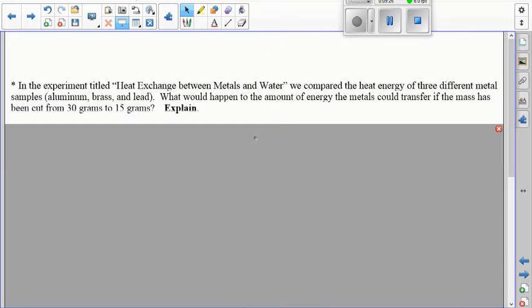In the experiment titled heat change between metals and water. So that was the one that used these guys on a string. This is the very first one we did when we were boiling metals. We compared the heat energy of three different metals. This is the aluminum one I'm holding in my hand. What would happen to the amount of energy the metals could transfer? So remember, we boiled these. We tossed them into our double insulator cup of water. How much energy would they be able to transfer if we took this aluminum sample, for example, let's say, and instead of being 30 grams like it is now, we cut it in half and it's only 15 grams. What would that do to the amount of energy that aluminum could send into the water? Please use numbers to explain yourself on this one or talk to me about some sort of equation. 90 seconds.